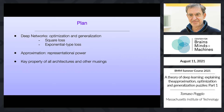This morning I'll speak about essentially optimization of deep networks, especially under the square loss. This afternoon I'll speak about a higher level topic, which is the representational power of deep networks, especially convolutional networks and potentially transformers and MLP mixers, and why they work as well as they do.